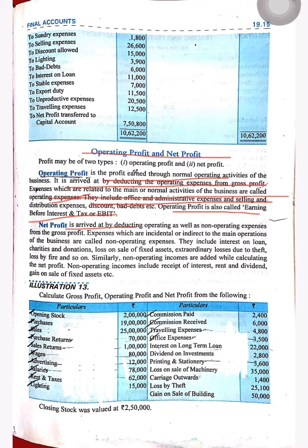Net profit is arrived at by deducting both operating and non-operating expenses from gross profit. Expenses that are incidental or indirectly related to the main operations of the business are called non-operating expenses — for example, loss on sale of fixed assets. Selling a fixed asset is not related to the core business. Similarly, interest received on a loan would be a non-operating income item.